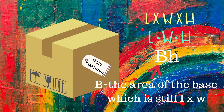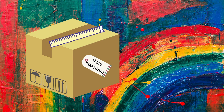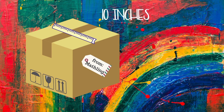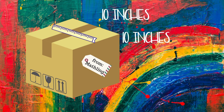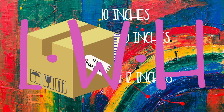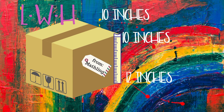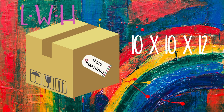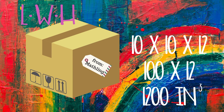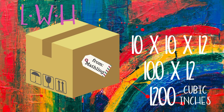If we're going to use the formula, we first need the measurements of the length, width, and height. Let's measure the length — that is 10 inches. And then we'll measure the width — the width is another 10 inches. And then we'll measure the height — the height is 12 inches. If length is 10, width is 10, and height is 12, we use the formula length times width times height: 10 times 10 times 12. Ten times 10 is 100, and 100 times 12 is 1,200. The volume of this package is 1,200 cubic inches, because our measurements were in inches.